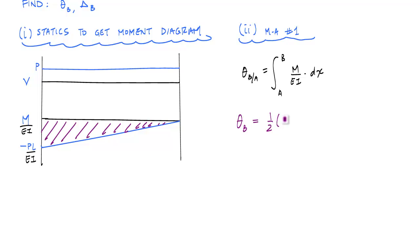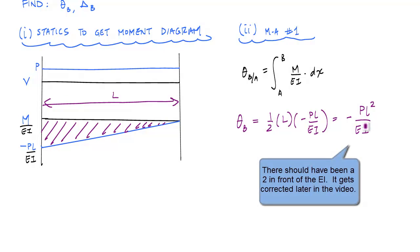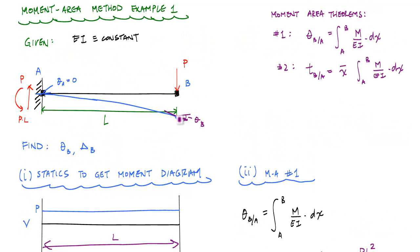That change in slope — which also equals the slope at B since slope at A equals zero — is one half times the base L times the height, which is minus PL over EI. That gives us minus PL² over 2EI, in units of radians. It's nice that we get a negative result because the slope at point B is actually negative based on our coordinate system where this is x and positive deflection — that would be a negative slope. You can calculate the change in slope between two points, but you have to use the deflected shape to confirm whether it's negative or positive.